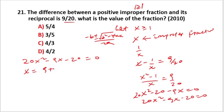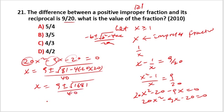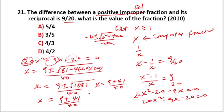Using the quadratic formula: x equals 9 plus or minus square root of b squared minus 4ac, over 2a. That gives x equals 9 plus or minus square root of 1681, over 40. The square root gives a positive improper fraction result, and a negative value which is rejected.